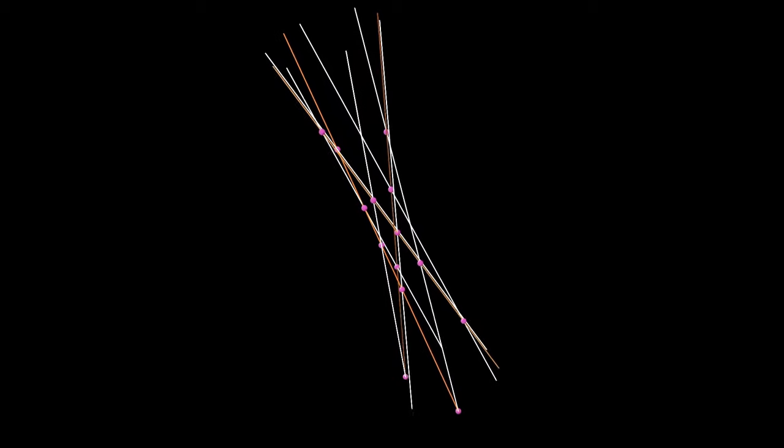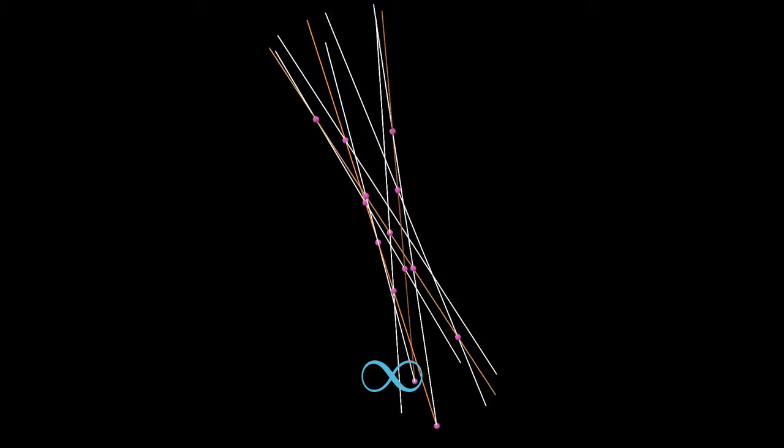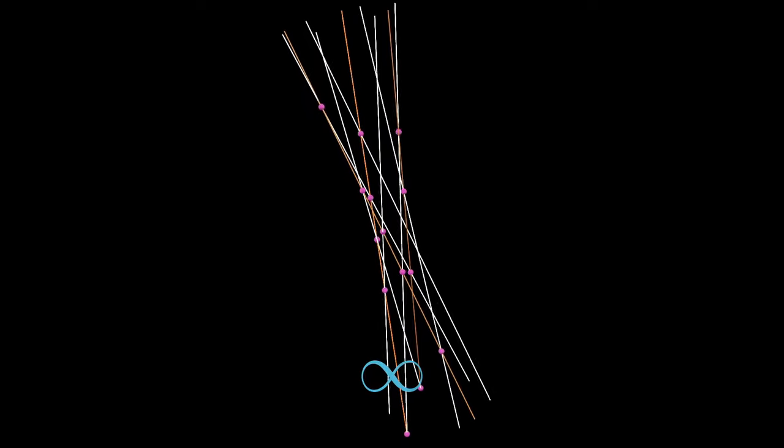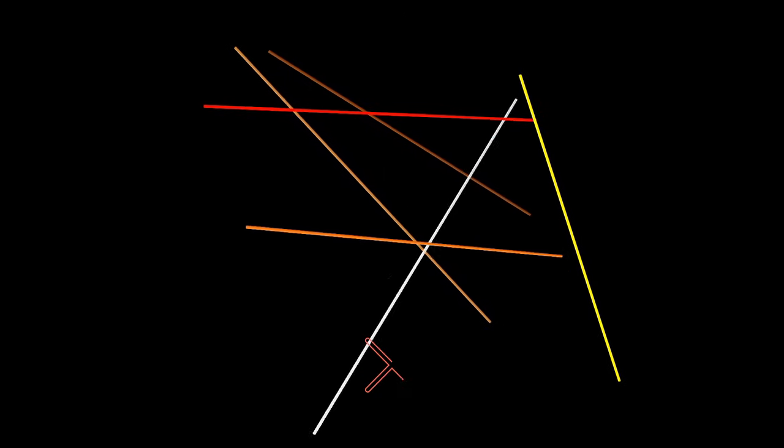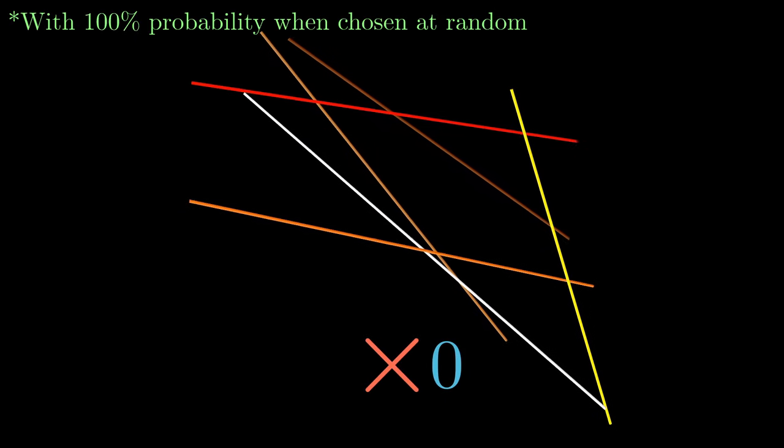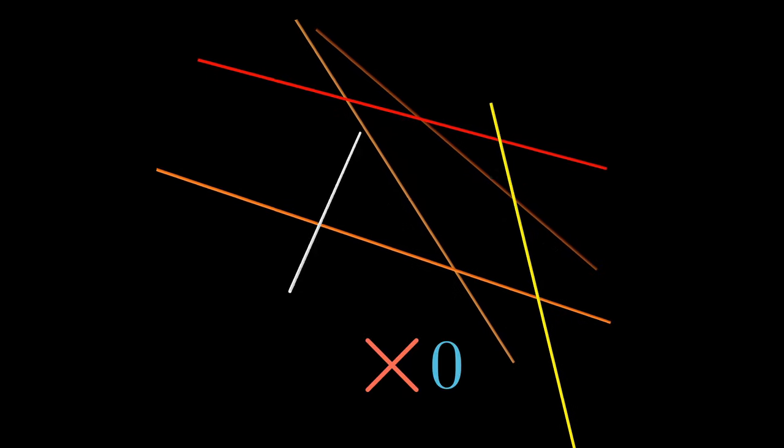It should be a complete surprise when I tell you that, just like before, there are still infinitely many lines that intersect all three. Maybe even more surprising, when we jump to five random lines, most of the time there does not exist any lines going through all five.